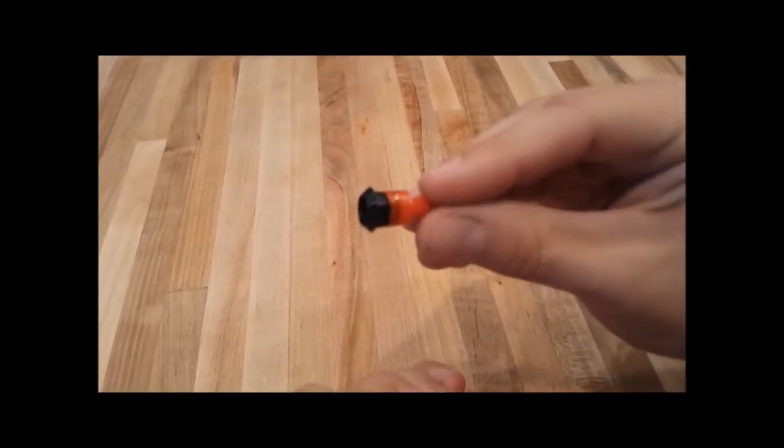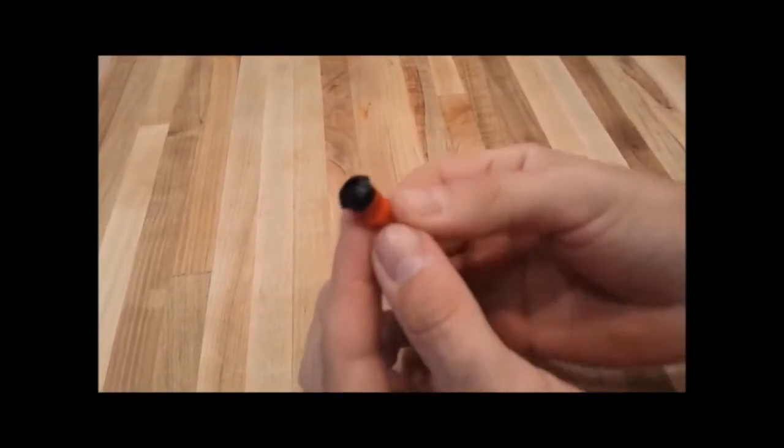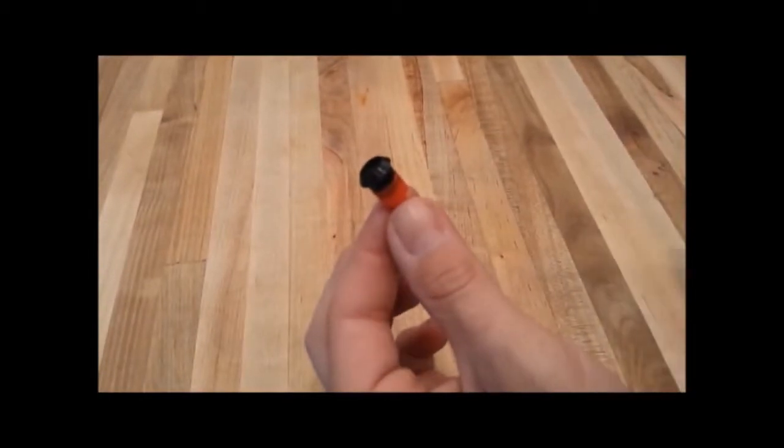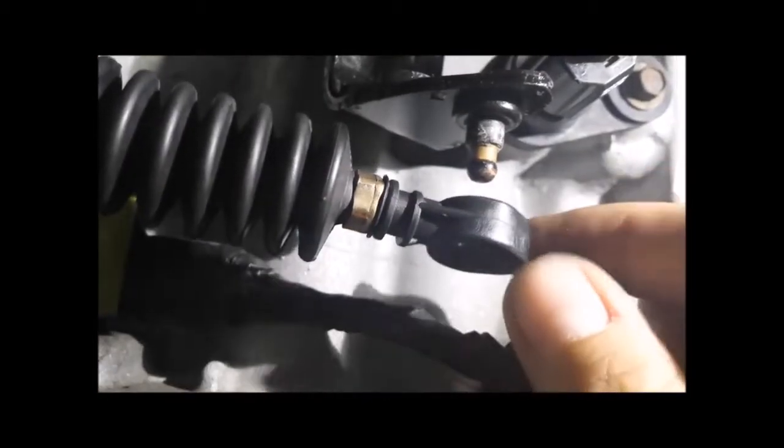After you remove all of the old bushing, if there's any left from the transmission cable, it should look like this.